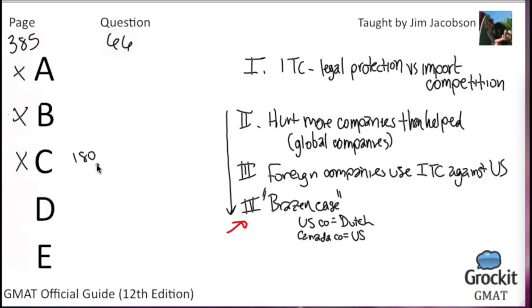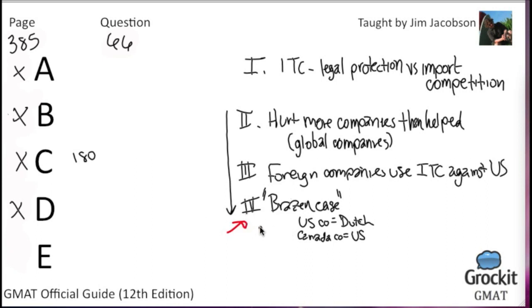In fact, C is a 180 of what we're after. D: it introduces an additional area of concern not mentioned earlier — no. And that leaves us with E. If we were in a hurry, we could just select this one pretty confidently because it's clearly not any of the other answer choices. E says: it cites a specific case that illustrates a problem presented more generally in the previous paragraph. The previous paragraph talked about how foreign companies can use the ITC against US companies, and then here in paragraph four we have exactly that happening. Yeah, that's totally what we were after — answer choice E.